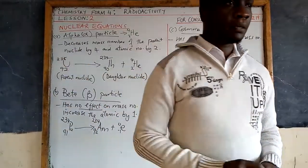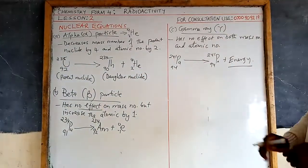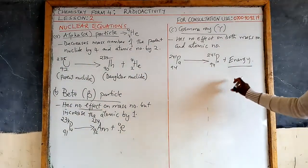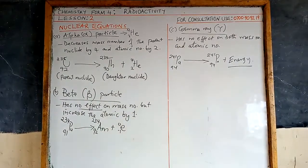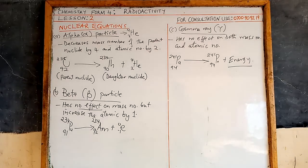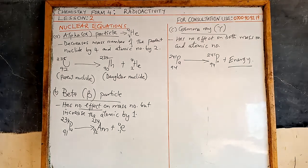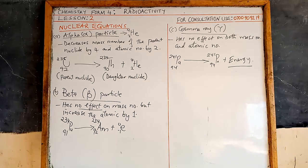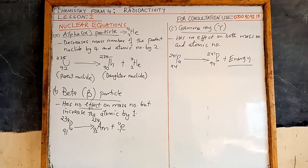That is how these particles are represented in nuclear equations. It is important to note that gamma rays can be emitted together with alpha and beta because they don't affect the mass number or atomic number. In an equation, they are simply shown as energy.